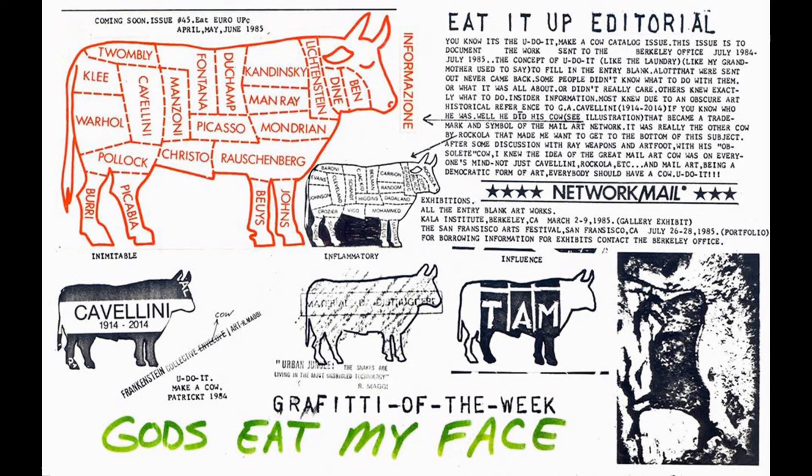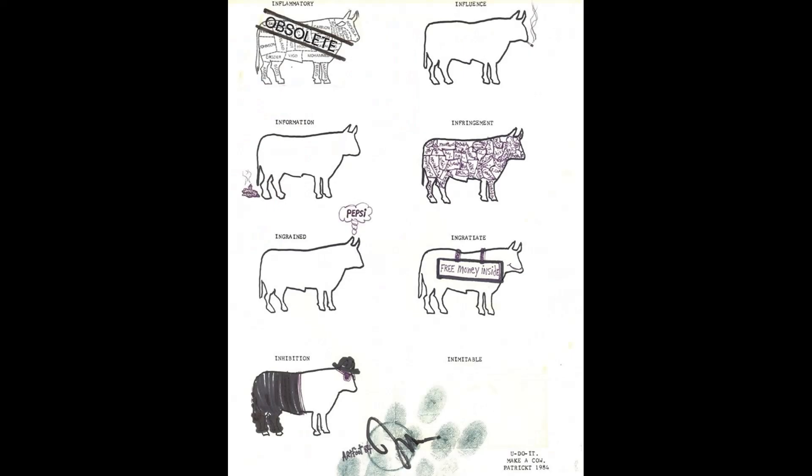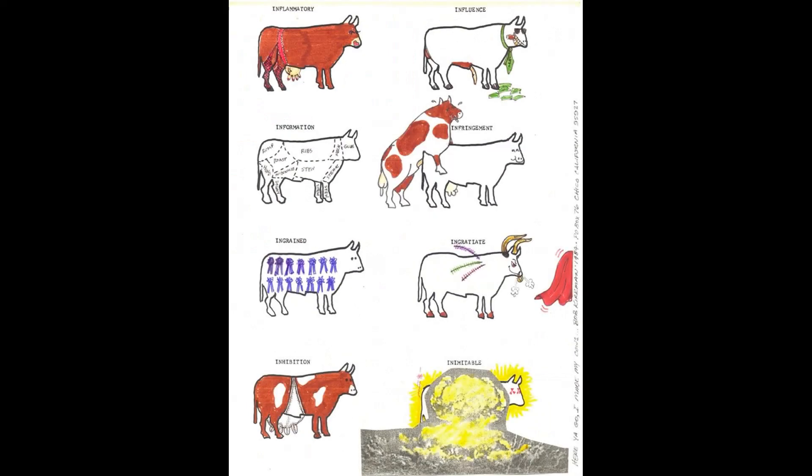The Italian word 'informicione' is printed sideways on the right of the original maillard cow. The 1982 maillard cow graphic by Guglielmo Achille Cavallini — born September 11, 1914, died November 20, 1990 — an infamous Italian mail artist famous for self-historification, was based on an approximately 1978 bull graphic by Carlo Battista.